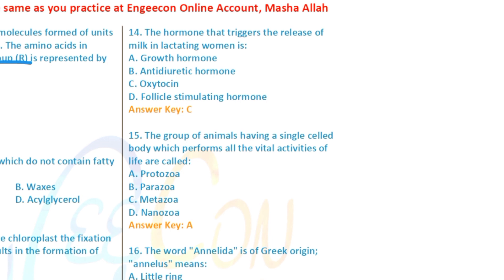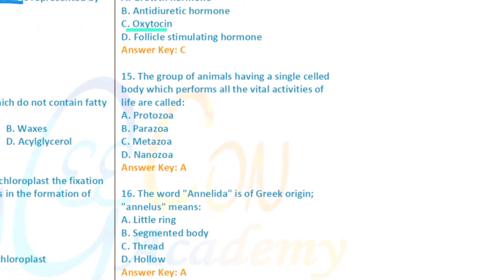Question 14: The hormone that triggers the release of milk in a lactating woman — the answer relates to prolactin or oxytocin. Question 15: The group of animals having a single-cell body which performs all vital activities of life — these are unicellular organisms.